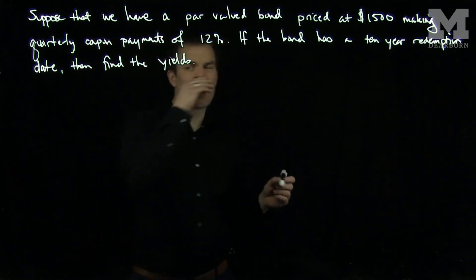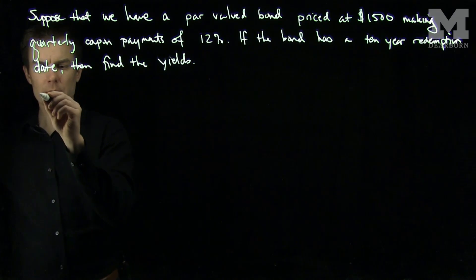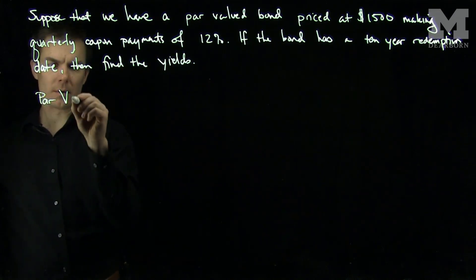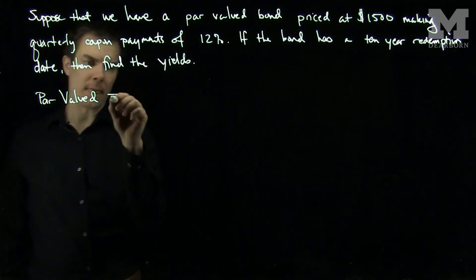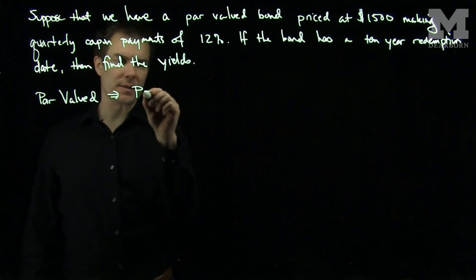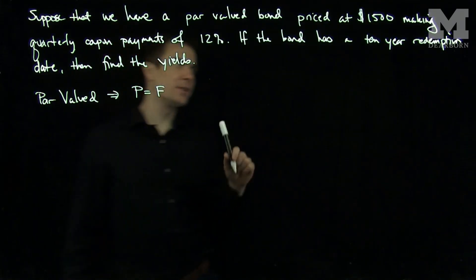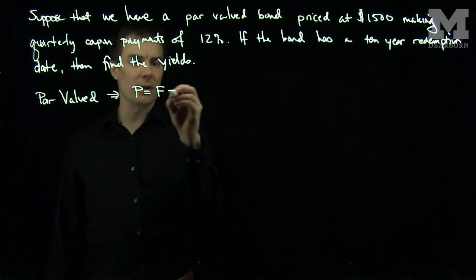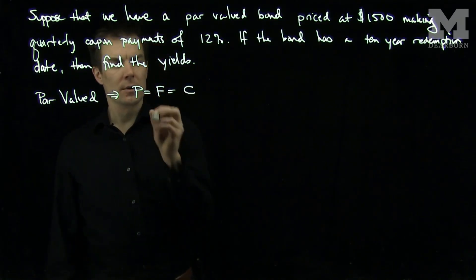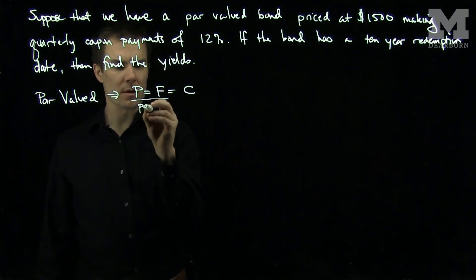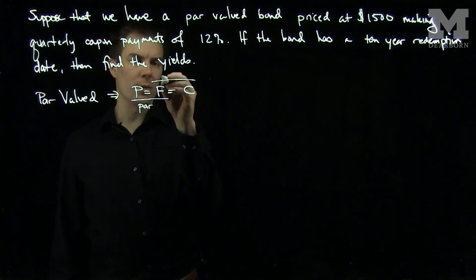We know that it's a par-valued bond, so when bonds are priced at par, par-valued implies that the price is equal to the face. Unless it's otherwise specified, that's also going to be the redemption value.